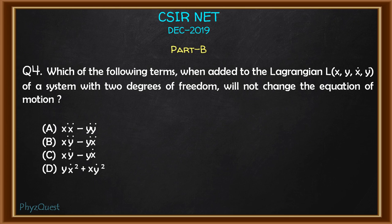This is the video solution for CSIR NET December 2019 part B question number 4. The question is which of the following terms when added to the Lagrangian of a system with two degrees of freedom will not change the equation of motion?